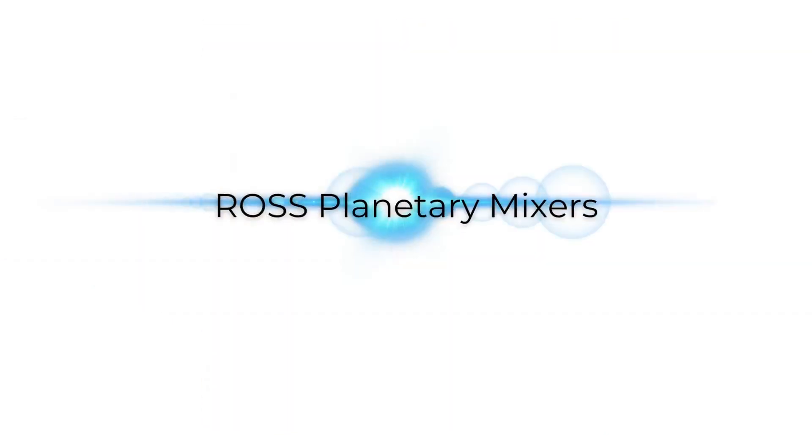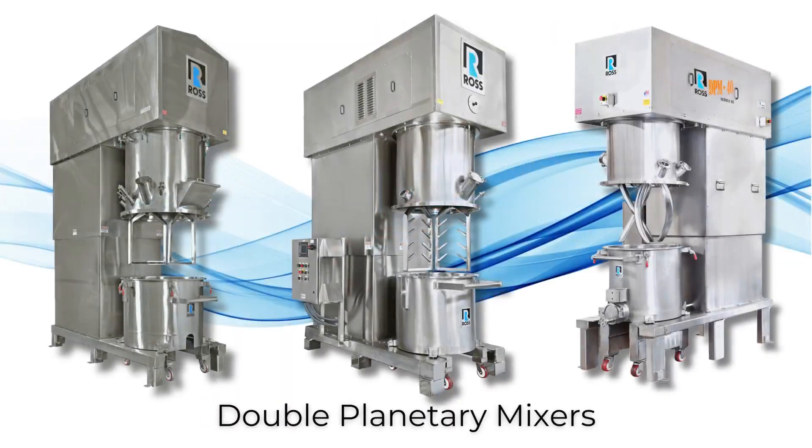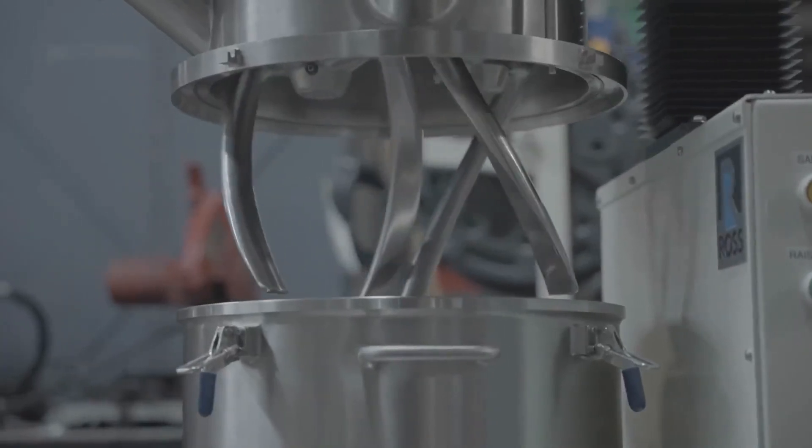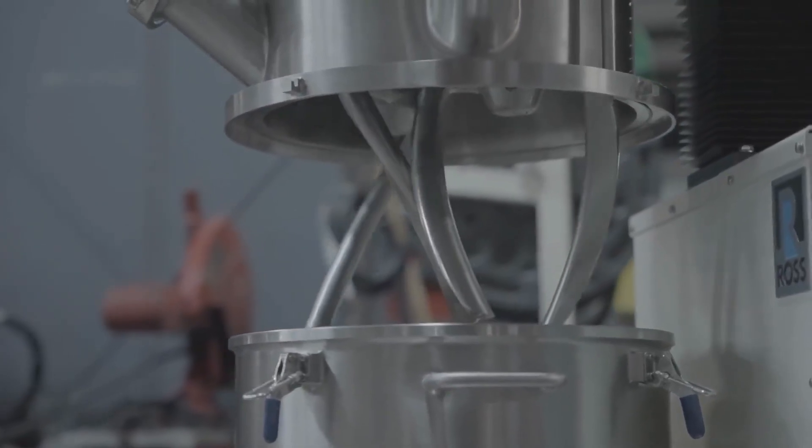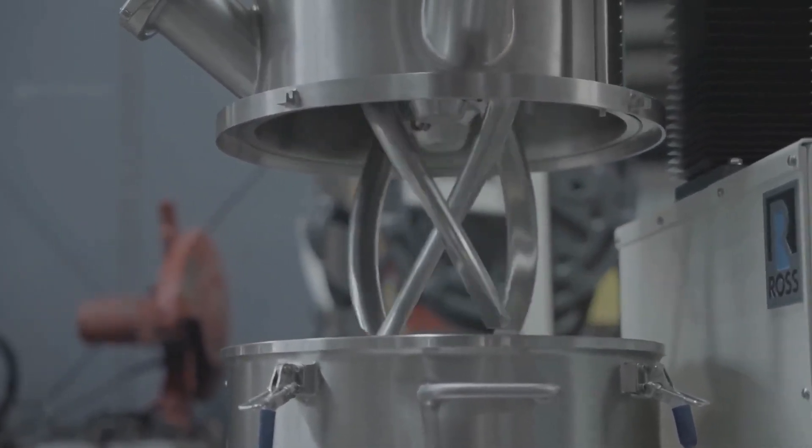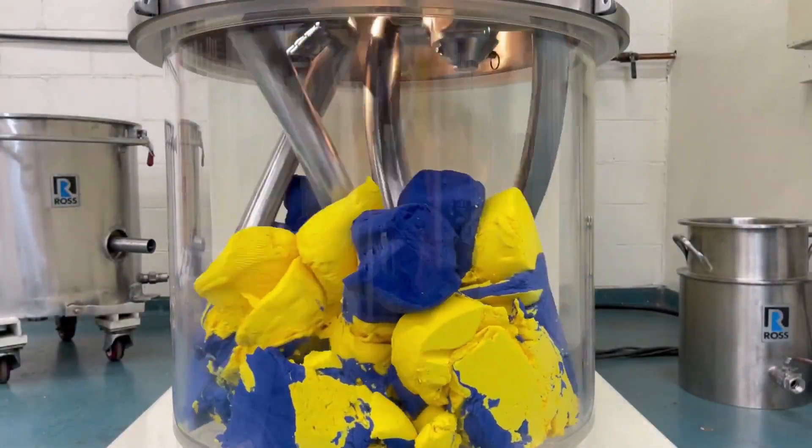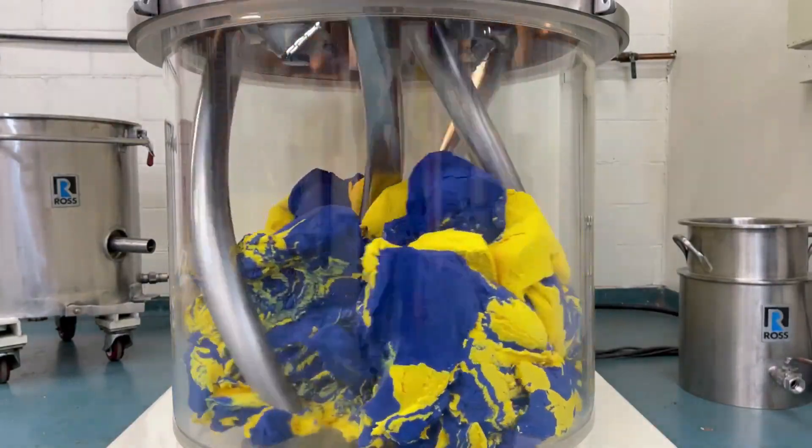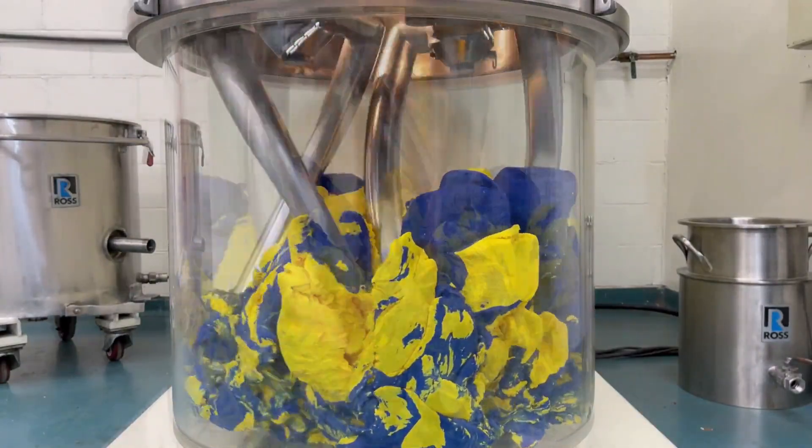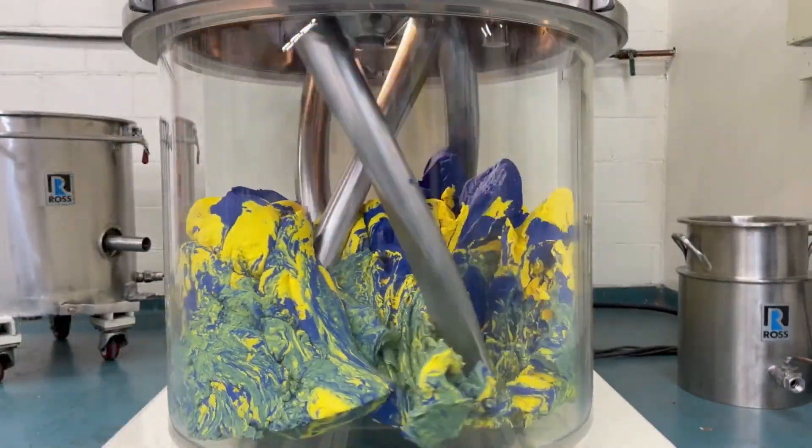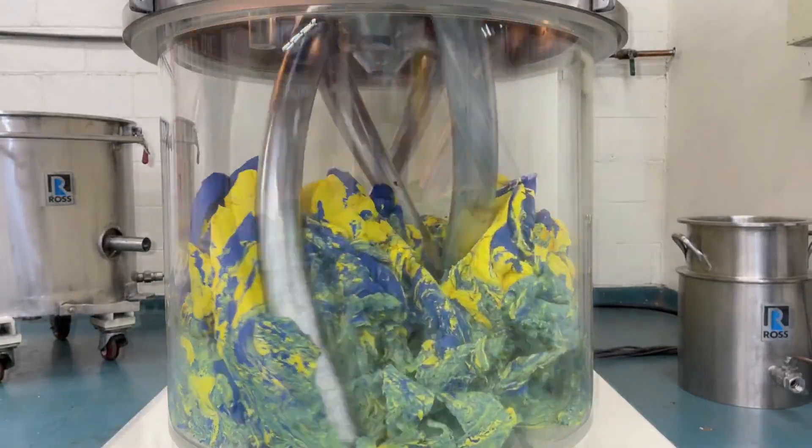Known for handling thick pastes and putties, the Ross double planetary mixer is particularly effective for 3D printer feedstock and intermediate materials. Consisting of two identical blades that rotate on their own axes, they orbit the mixing vessel on a common axis. The blades continuously advance along the periphery of the vessel, removing material from the vessel wall and transporting it to the interior.